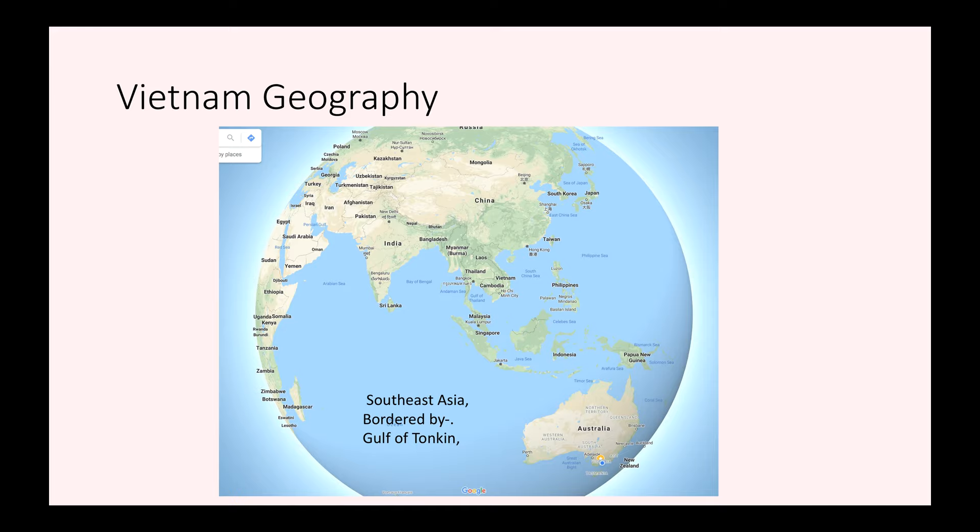In this presentation I want to describe the geography of Vietnam. Vietnam is located here on the map. It has a kind of S shape which I'm just going to follow with this pointer. That's the bottom of the S and we're going back up to the top of the S there.